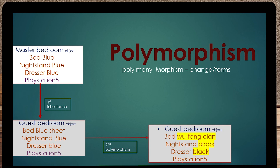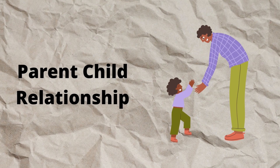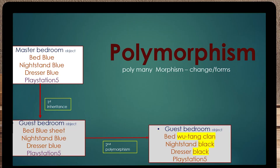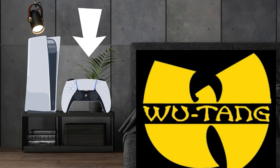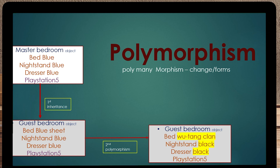Now, polymorphism. The word polymorphism means poly means many, morphism means to change. In this example, we first have inheritance where the master bedroom object is passed to the guest bedroom object — that's the parent-child relationship. We're going to use polymorphism to change the guest bedroom object. Maybe the person doesn't like blue sheets, blue nightstand, and blue dresser. So in this example, I've changed the bed to Wu-Tang, nightstand to black, dresser to black, and left the PlayStation the same. You can see how polymorphism and inheritance kind of go hand in hand.